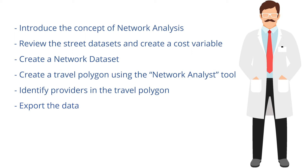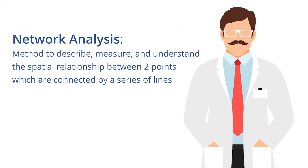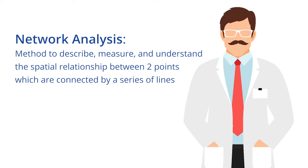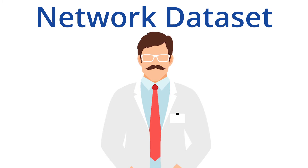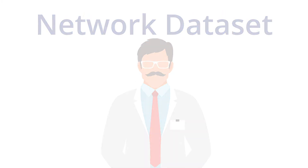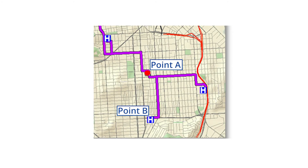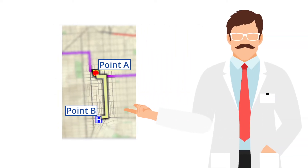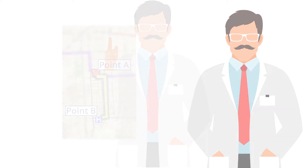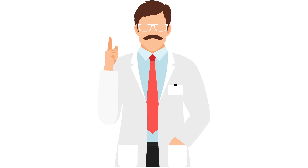First, let's discuss the concept of network analysis. Network analysis is a method used to describe, measure, and understand the spatial relationship between two points which are connected by a series of lines. Network analysis requires a specific type of dataset called a network dataset, which is composed of interconnected lines and points. For example, one common use of network analysis is to identify the shortest path between point A and point B using a street network dataset. Street network datasets are primarily used to identify travel patterns of individuals using common methods of transportation such as cars. The dataset contains line segments representing streets and points representing addresses. Each street segment has properties such as length, speed limit, and direction. Ultimately, network analysis is capable of identifying the shortest distance between two points using a series of interconnected lines.